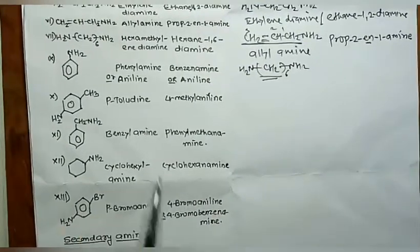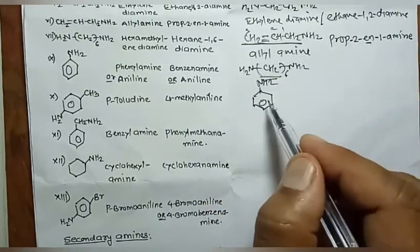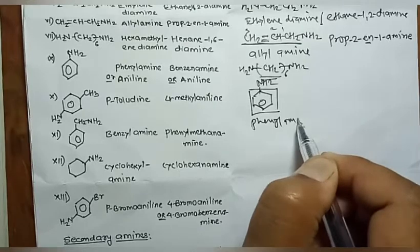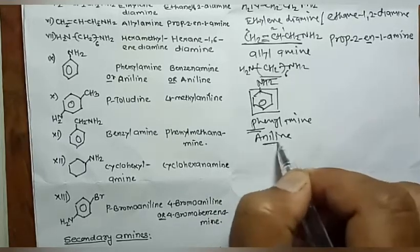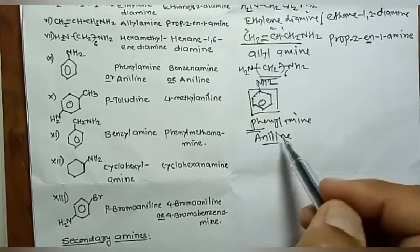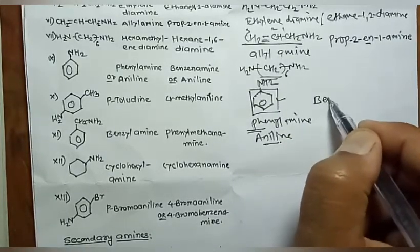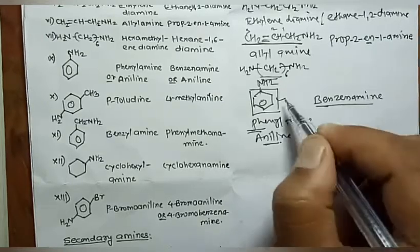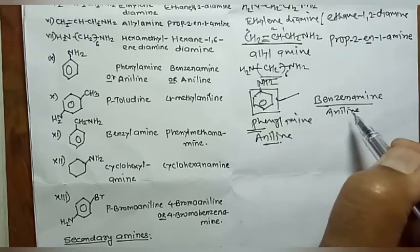For aromatic amines, the first member of the series is C₆H₅NH₂. It contains a phenyl group, so the common name is 'phenylamine'. It is also known as 'aniline', which is accepted by both the common name method and the IUPAC method. The IUPAC name is 'benzenamine', derived by replacing benzene's ending with amine.